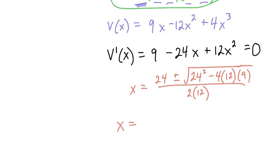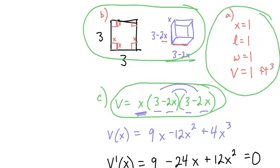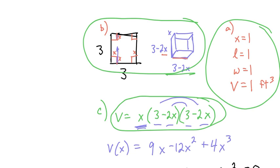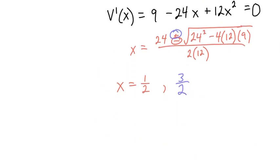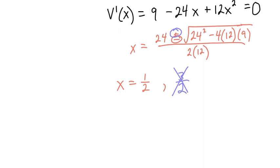So I actually get a couple answers. When I did the minus, I get 1 half. Because when I did the plus, I got 3 halves. But think about why that doesn't make sense. Because if you cut 1.5, 3 halves on each side, you actually have no volume. So this answer doesn't make any sense.